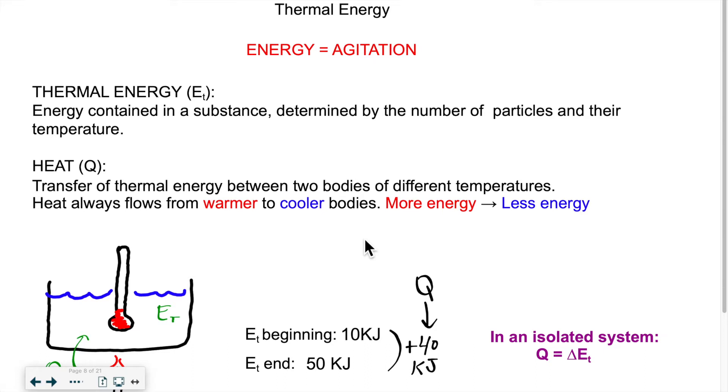Obviously that heat comes from another source, another body, another substance. We also know that heat always flows from something warm to something that is cooler. So high energy to low energy.